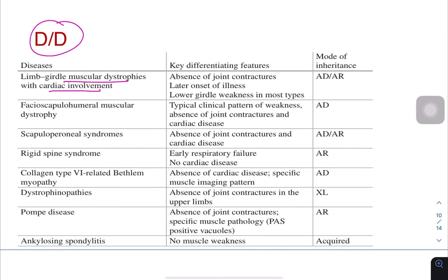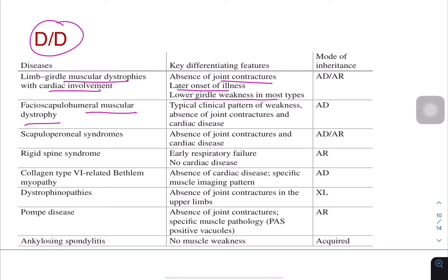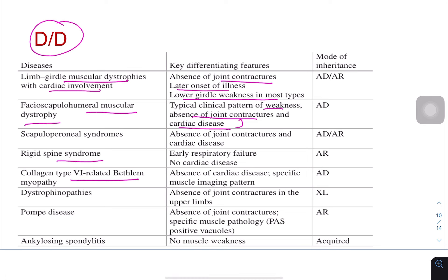Differential diagnoses include limb girdle muscular dystrophies with cardiac involvement, but these would not have joint contractures, onset would be later, and lower girdle weakness is more prominent. FSHD could also be a differential diagnosis, but the clinical pattern of weakness is typical and there are no joint contractures or cardiac disease. Rigid spine syndrome or Bethlem myopathy could be considered, but there is no cardiac involvement in Bethlem, and it has a specific muscle imaging pattern.